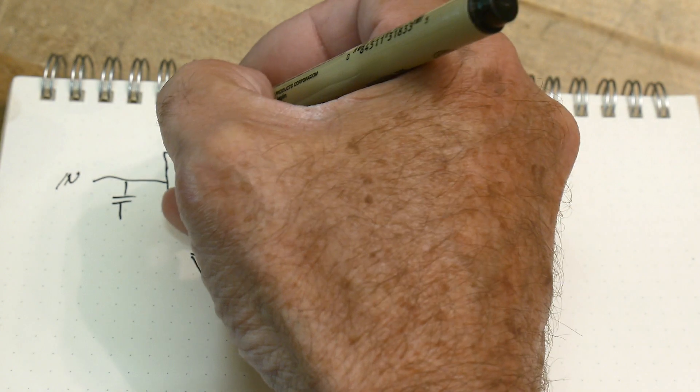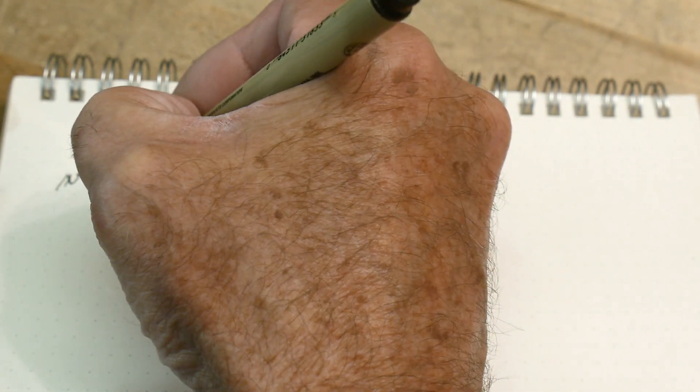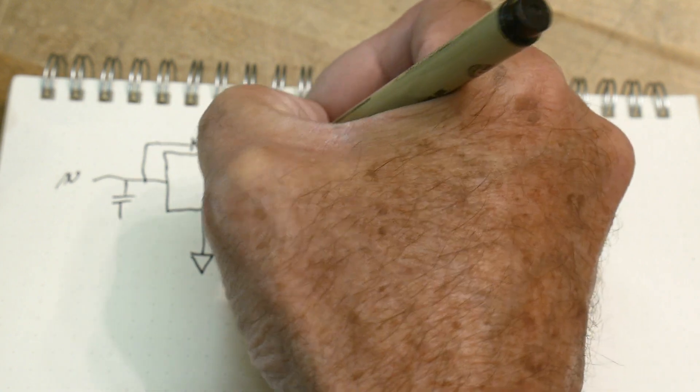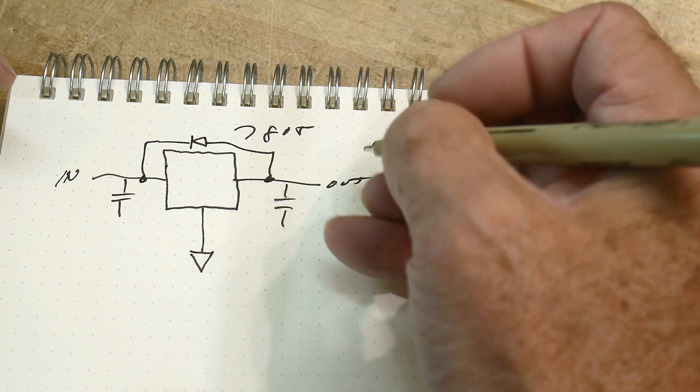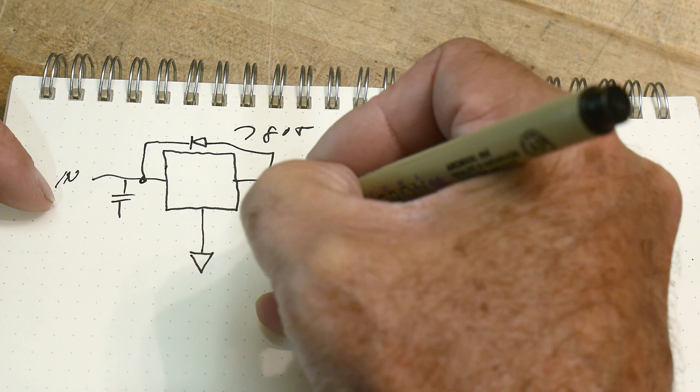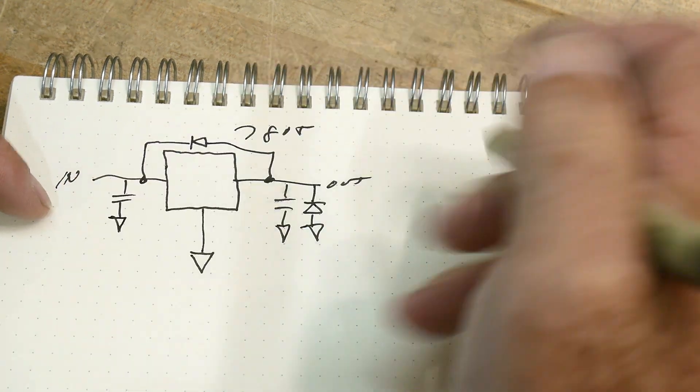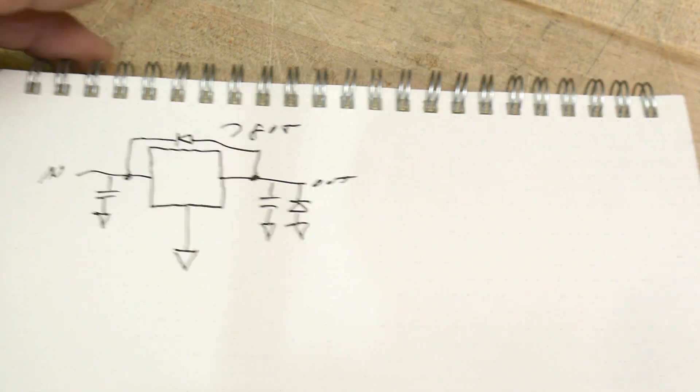You can also put an optional diode over here to protect it from on-off spikes and stuff. And if you're really paranoid, you can put a diode over here too to protect things. So you can do all of those things with it.